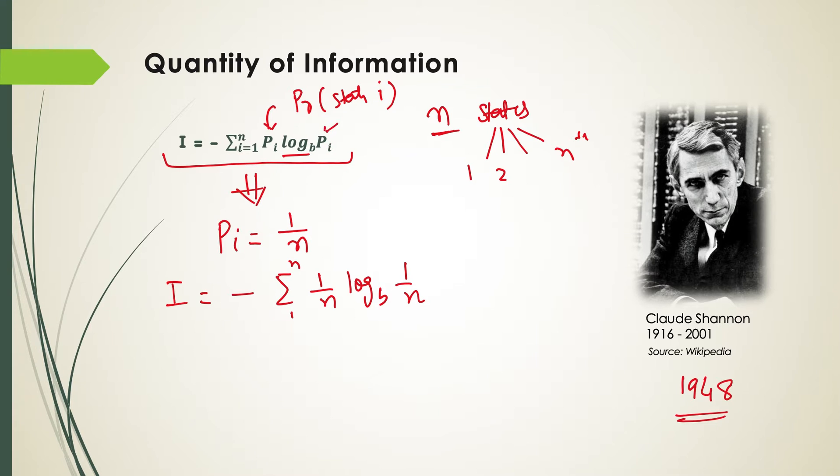And why this minus sign here? Because this P_i, which is the probability that a system is in state i, has to be less than 1 because the probability is between 0 and 1. So log base B, where B is some natural number, of a quantity which is less than 1 will be negative. And we want the information to be positive. So all of these log P_i's are negative and their sum will also be negative. So we add an additional negative sign in front.